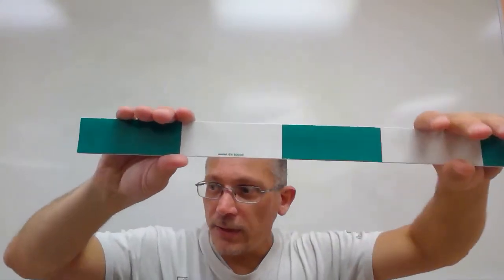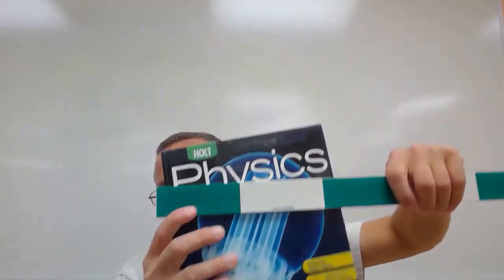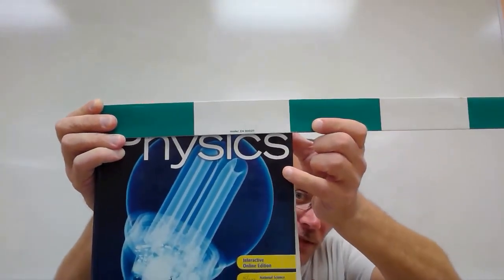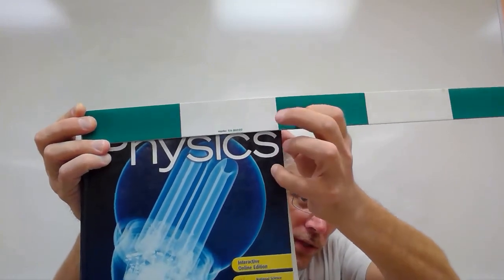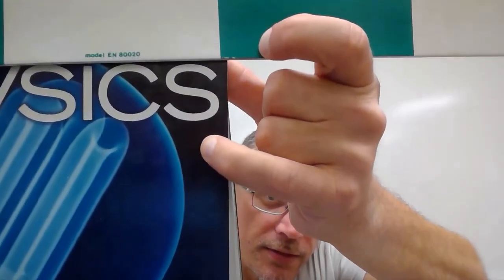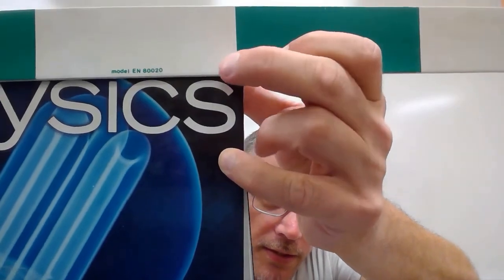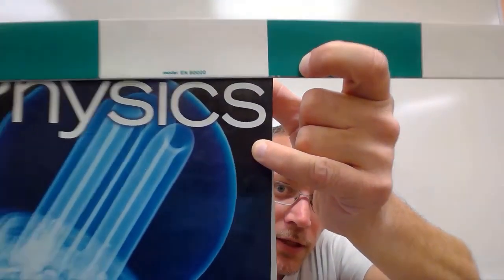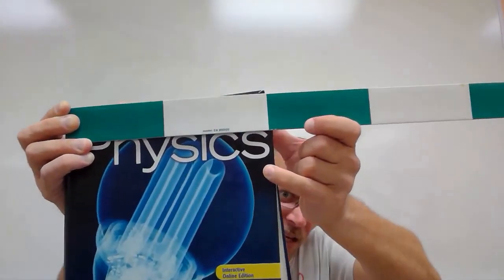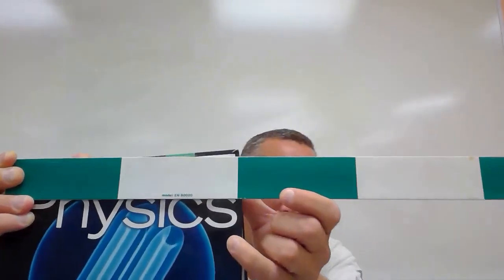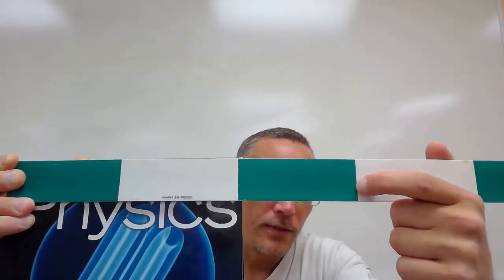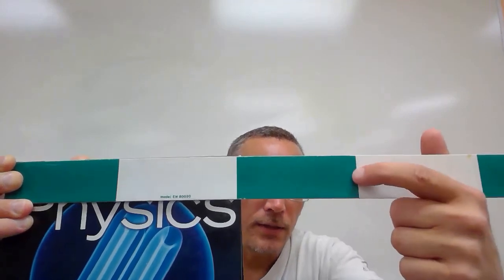Let me hold the ruler up so you can see. The book goes more than 20 centimeters — you can see it goes further than that 20 cm mark. Is it 30 centimeters? No, it's more than 20 but less than 30.